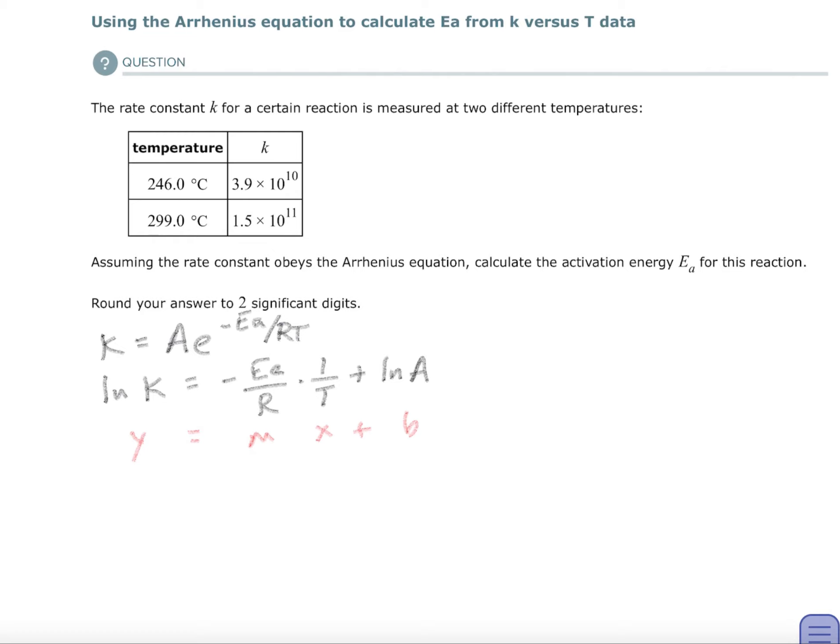A e to the negative activation energy over RT. Now if you take the natural log of both, what you're going to see is they've arranged it in such a way that you can get a y equals mx plus b. And if you remember that from algebra 1, that's simply just a straight line graph.